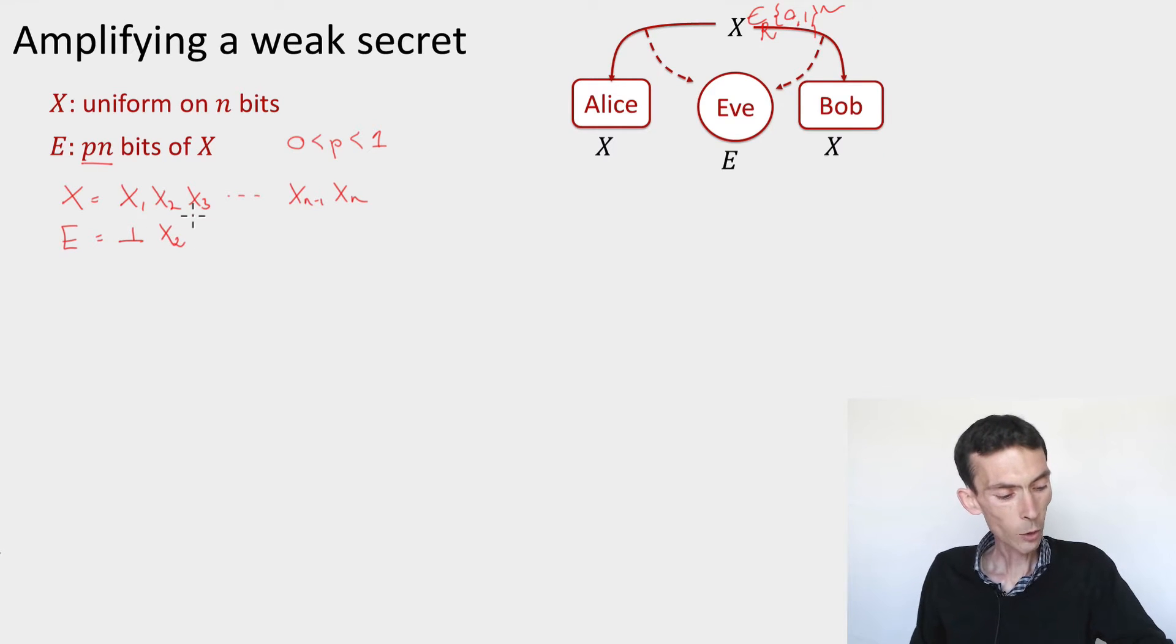So for instance here, the eavesdropper has x_2, does not have x_3, etc. Maybe it has x_{n-1} and does not have x_n. Right? So it keeps pn of the bits in this way.